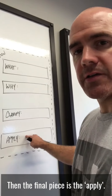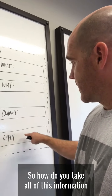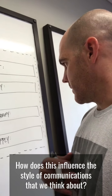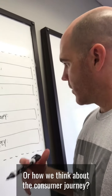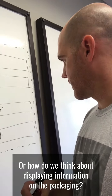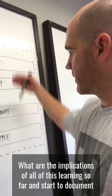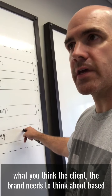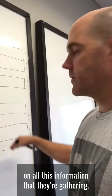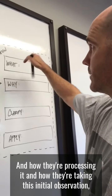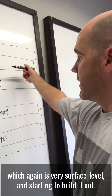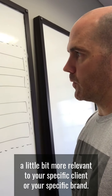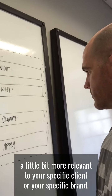The final piece is apply. How do you take all of this information and start to think about what does this mean for the brand? How does this influence the style of communications, the consumer journey, or how information is displayed on packaging? What are the implications of all of this learning? Start to document what you think the client and brand need to think about, taking this initial surface-level observation and building it out into something more unique, more impactful, and more relevant to your specific client or brand.